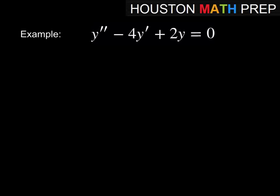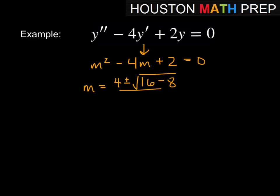Alright, here we've got another example. Y'' - 4y' + 2y = 0. When we convert to auxiliary equation, m² - 4m + 2 = 0. We might notice this doesn't factor, so we'll go ahead and use the quadratic formula to do this. So m = 4 ± √(16 - 8) all over 2.